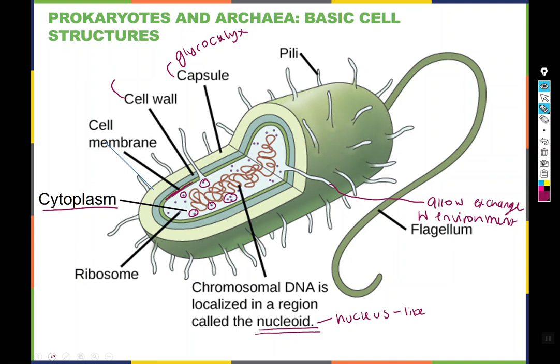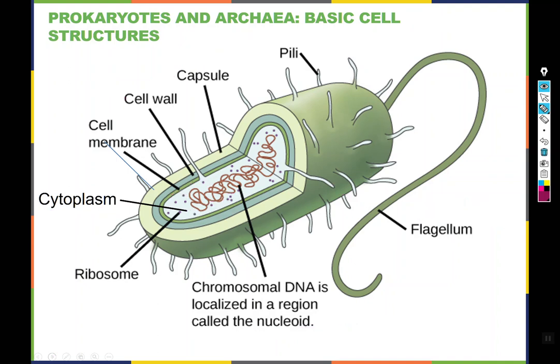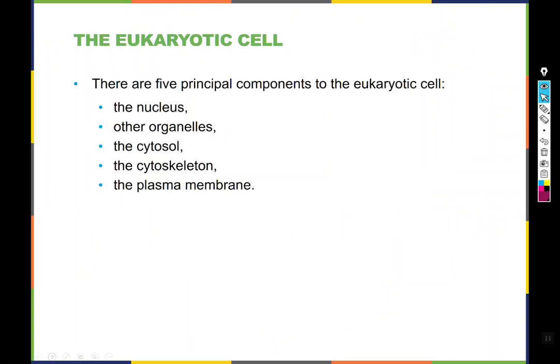Finally, there is a flagellum, which is a tail that permits the organism to swim. Moving on to eukaryotic cells — if this were microbiology, we'd go much more into detail about the diversity of prokaryotes because they are extremely diverse as a group. But we just don't have the time in Biology 160. We're going to do a cursory examination of prokaryotes and move on to eukaryotes because this class is a feeder class for A&P, and therefore eukaryotic cells are the ones we care most about.